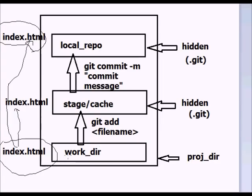In our previous session, we discussed the basic commands in GIT to initialize. We discussed the main page in GIT, the working directory, staging, and details of files. We also covered configuration, add, commit, and status commands.